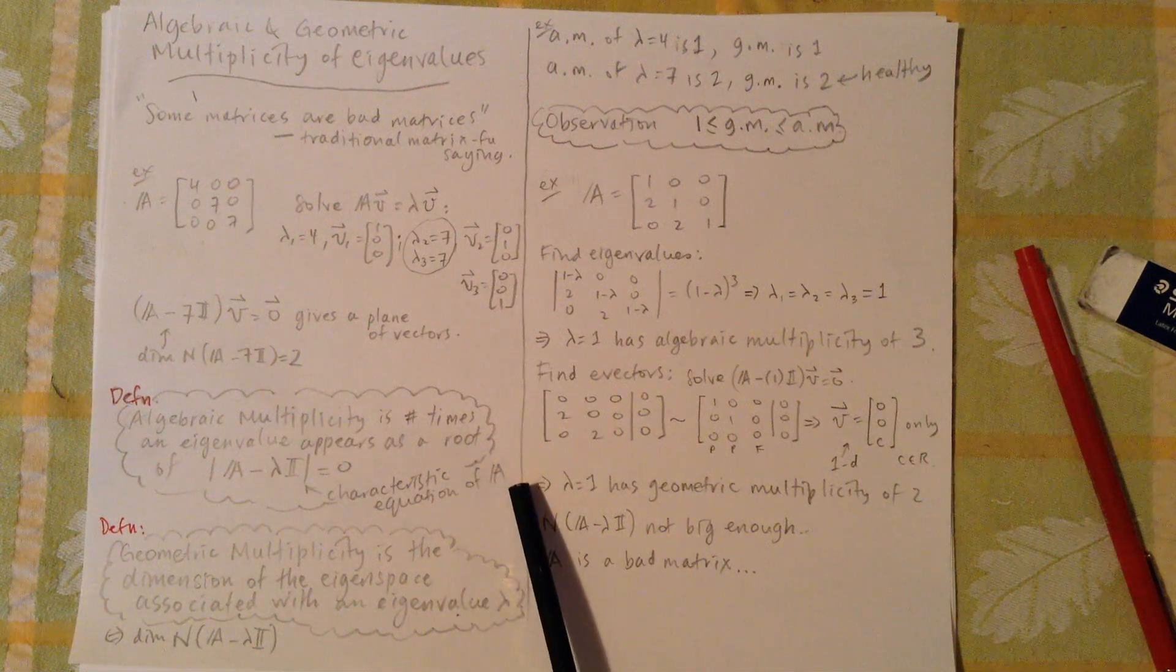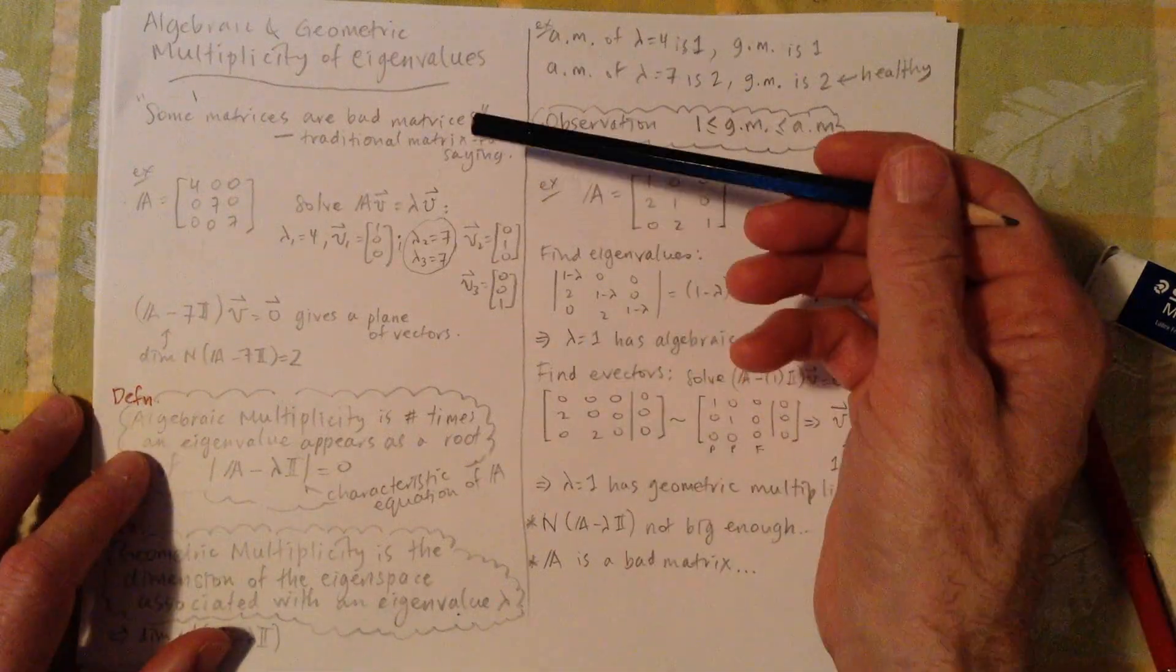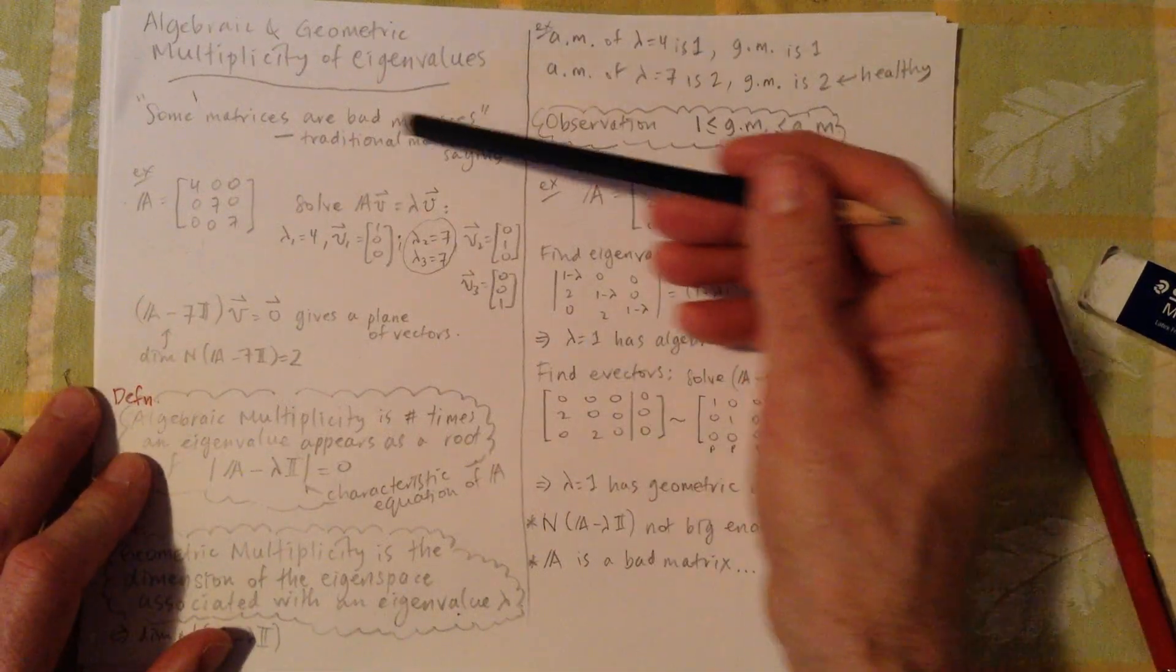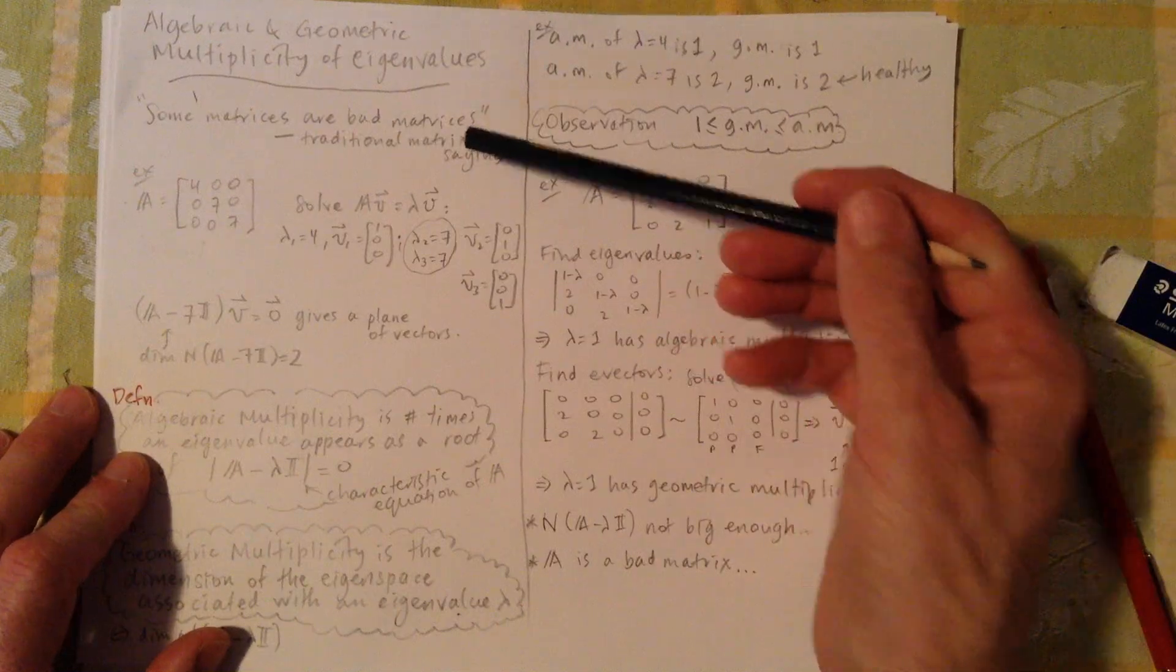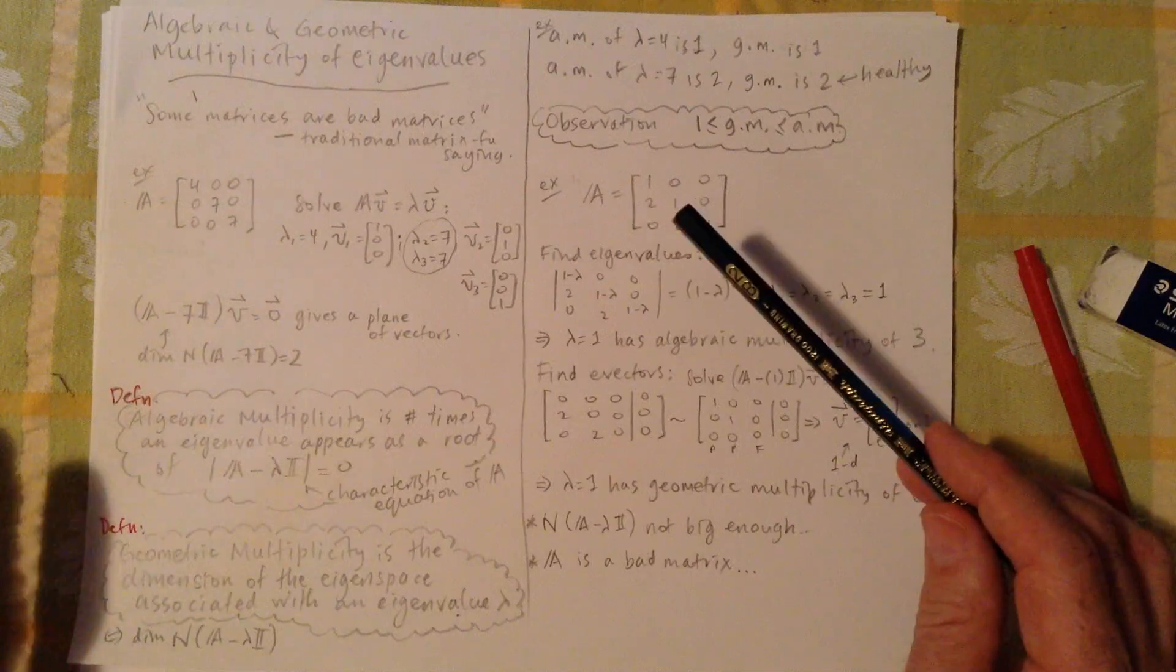Short piece on algebraic and geometric multiplicity of eigenvalues. There's a traditional matrix saying some matrices are bad matrices. We're going to cover that here. For the most part, pretend this didn't happen.